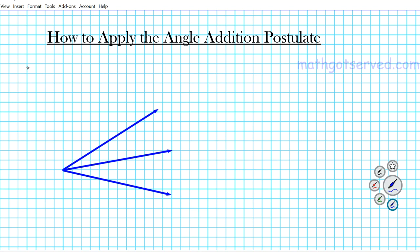So what is the angle addition postulate? Let's say we have two small angles combined together to form a big angle. So let's say we have angle ABC — that's the vertex B, so that's the first small angle.